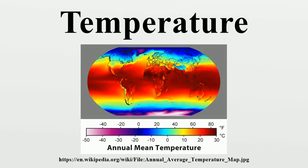Temperature is an objective comparative measure of hot or cold. It is measured by a thermometer, which may work through the bulk behavior of a thermometric material, detection of thermal radiation, or particle kinetic energy. Several scales and units exist for measuring temperature, the most common being Celsius, Fahrenheit, and, especially in science, Kelvin. The coldest theoretical temperature is absolute zero, at which the thermal motion in matter would be zero.